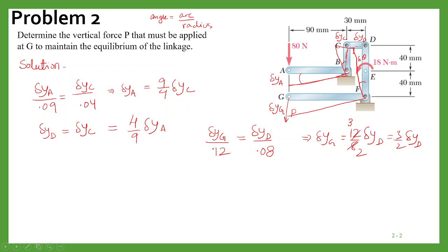And also this angle delta theta, this will be equal to delta y_d divided by 0.08, and we can write in terms of delta y_a, so 4 by 9 delta y_a into 1 upon 0.08, and finally when you simplify, this equals to 5 by 9 delta y_a. So this is how you can calculate this.